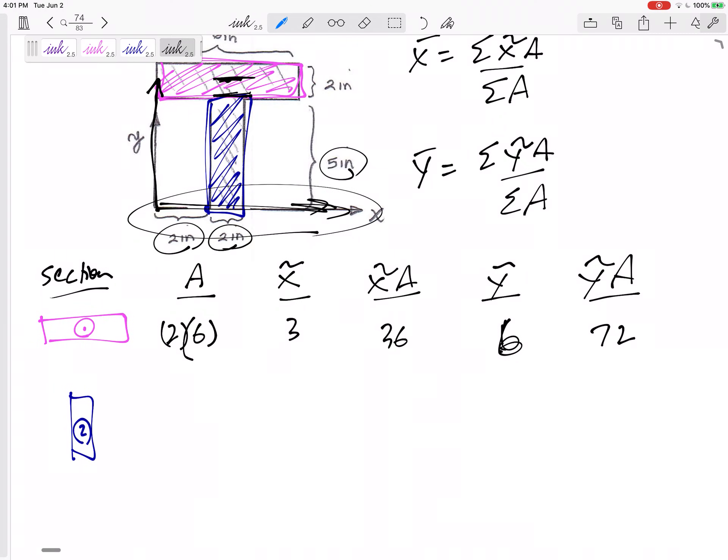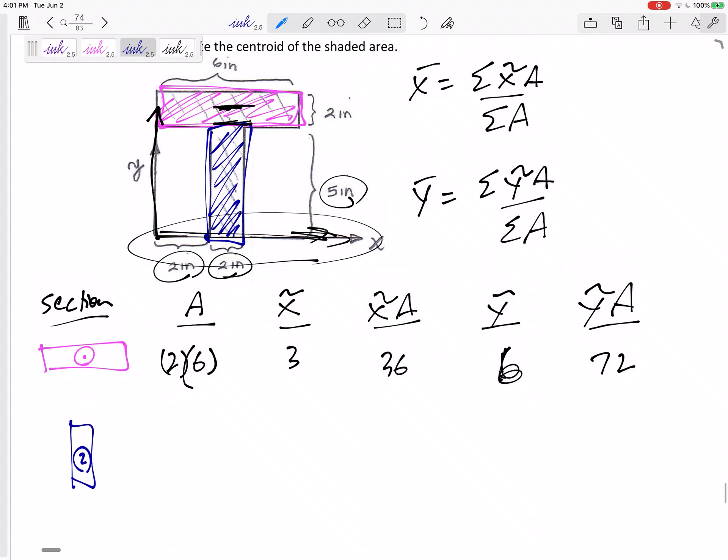Shape number two, the blue rectangle, its area, base times height is 10. Where is its centroid? Right in the middle. So that would be at three. And this one, yes, would be 2.5 because that's already measured from the origin. This would be 30. This would be 25.